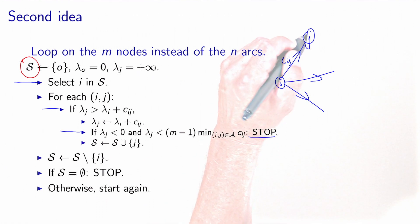If not, because we have updated the value of lambda j, then we add node j to the set of nodes, so that it will be treated later on. Once we have processed all the arcs leaving node i, we can remove node i from the set S. It has been treated. And we repeat this until the set of nodes is empty, and there is no node to treat anymore.